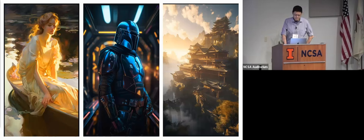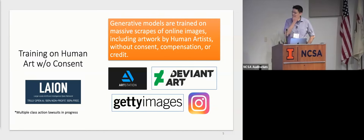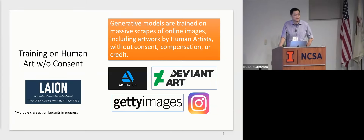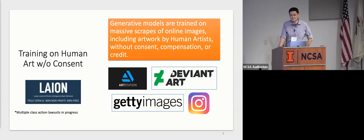What's the problem? Fundamentally, all these models come from the fruits of a poisoned tree. They've been trained on human images, most of which were obtained without consent, against copyright, and without compensation or credit. There are lots of legal issues, but what I want to talk about are the actual realistic harms happening today.